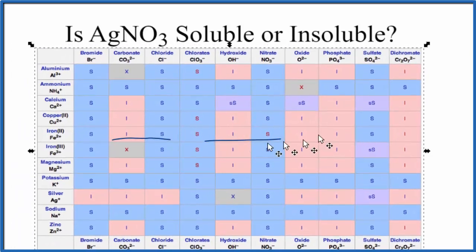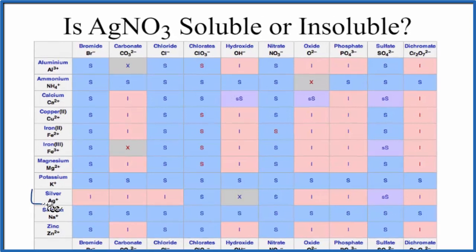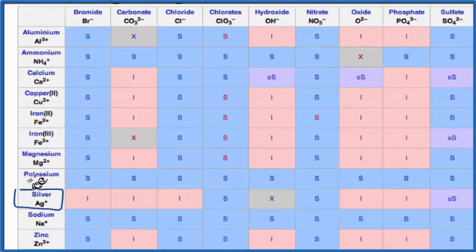So here's a solubility chart, and we find silver. These are the positive ions, the cations here. There's silver, Ag+, and then we're looking for nitrate. Nitrate is right here, NO3-.